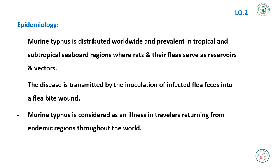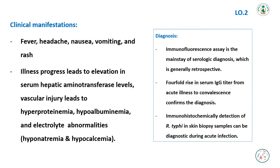Murine Typhus is considered an illness in travelers returning from endemic regions throughout the world. The clinical manifestations of rickettsial disease include fever, headache, nausea, vomiting, and rash. The illness progression leads to elevation in serum hepatic aminotransferase levels.